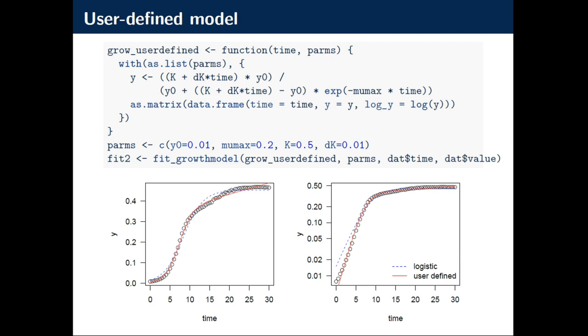Here an example for a user-defined model. What I do here is I make the carrying capacity a function of time. This is here. Instead of k, I put in k plus dk times time. So we have an additional slope in the model. And this is then easily plugged in and can fit it like a standard model. There's a little bit more technique to make this even more general but this is here left out. And what you see that it fits now much better compared to the other one.